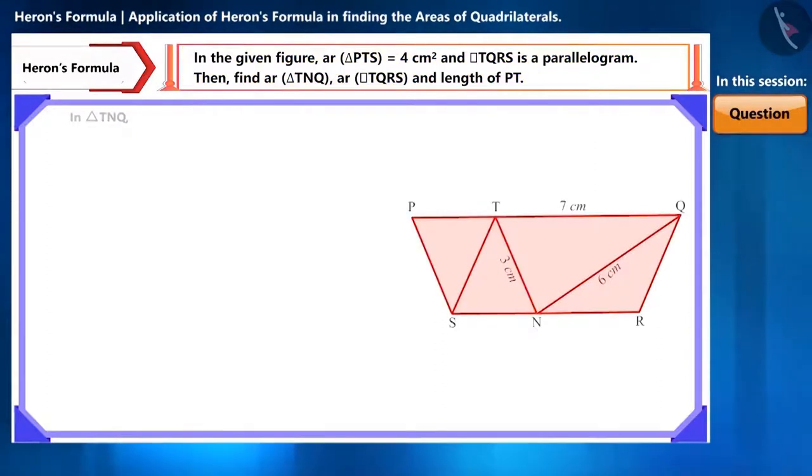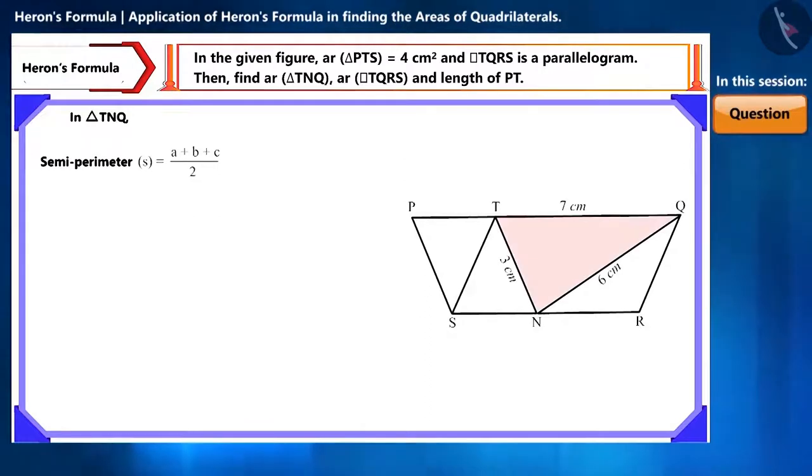In the figure, the length of all three sides of triangle TNQ is given. By using Heron's formula, we can easily find the area of this triangle. First, we will find its semi-perimeter, S. Let's assume the length of side TN as A, the length of side NQ as B, and the length of side QT as C. Now, S is equal to the sum of these three sides divided by 2. We will obtain S as 8 cm.